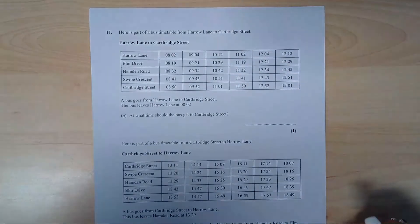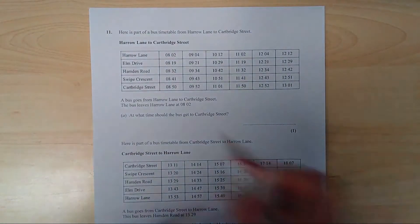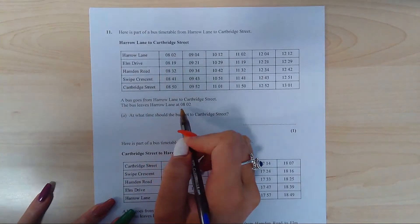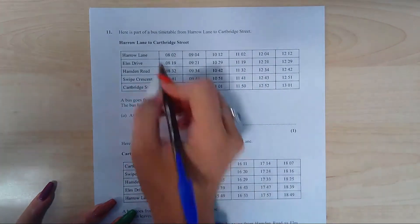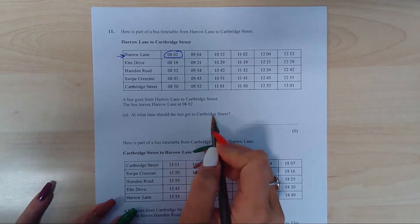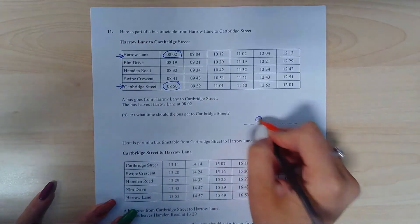Okay, moving on to question 11 then. Question 11a asks, a bus goes from Harrow Lane to Cartbridge Street. The bus leaves at Harrow Lane at 8:02. So you then need to look at the table and find Harrow Lane at 8:02. It then asks, at what time should the bus get to Cartbridge Street, which is this one here. The bus then arrives at 8:50.